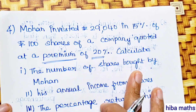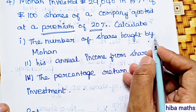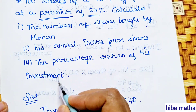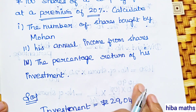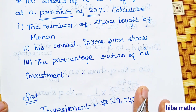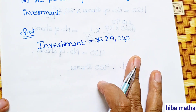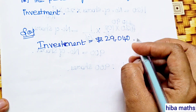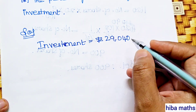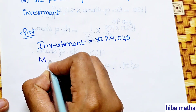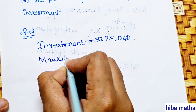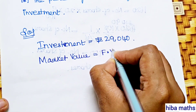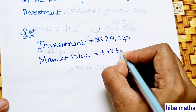Calculate: (a) the number of shares bought by Mohan, (b) his annual income from shares, and (c) the percentage return on his investment. Investment is rupees 29,040. Now we need to find the market value.